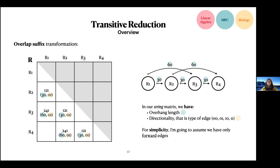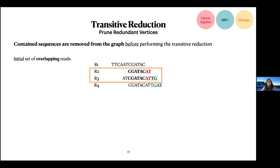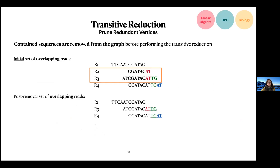We want to remove redundant vertices. A redundant vertex is a read that is fully contained within another read. For example, R2 is a redundant vertex because its connections do not add any useful information to the graph — everything R2 tells us is already covered by R1 and R3. We remove these vertices and all their connections.